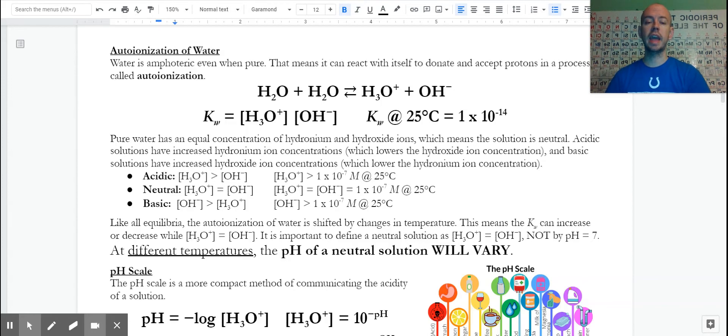Since this is our KW value, if we're pure water that is neutral, that means that this hydronium is equal to hydroxide, and they're both equal to 1 times 10 to the negative 7th when we're at 25 degrees Celsius. That is neutral. Hydronium equals hydroxide.